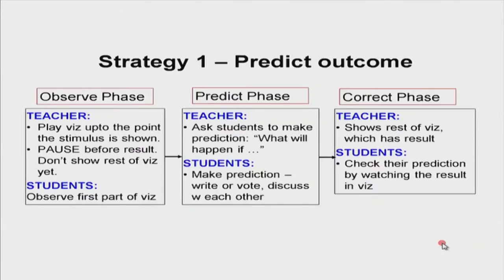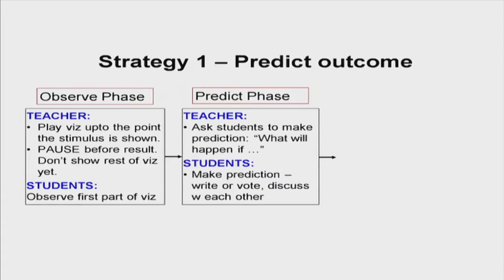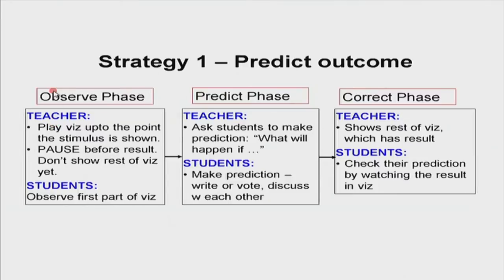After students make their prediction there is the correct phase: the teacher shows the rest of the visualization and students do a self-check of their prediction by watching the result. In the balloon example, students see that the balloon did not move backward as expected — instead it moves forward. Then there is a discussion phase. To summarize the three phases: observe, predict, and correct. This is very common in engineering — pause the visualization, do an activity during the pause, then have students correct by playing the rest.